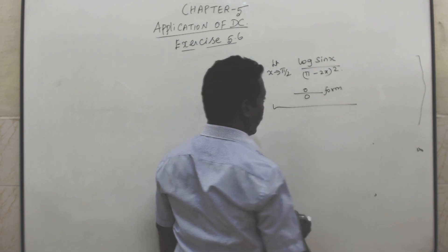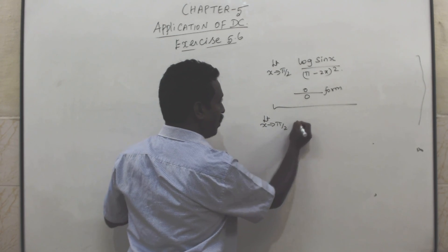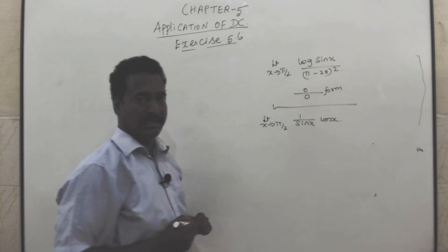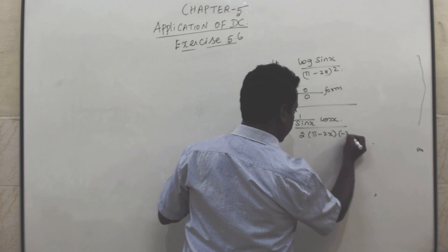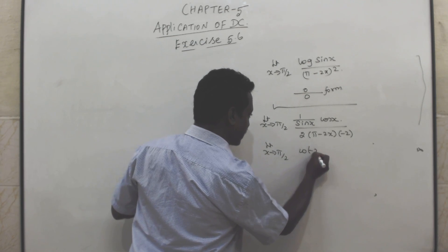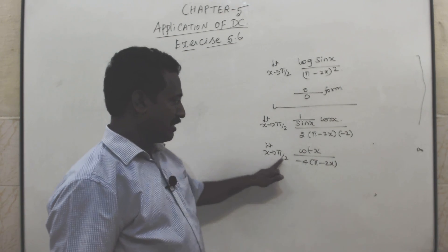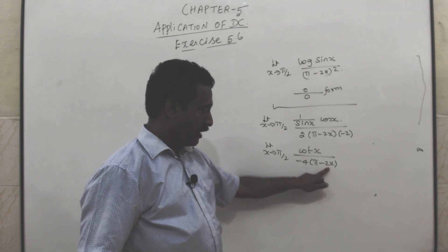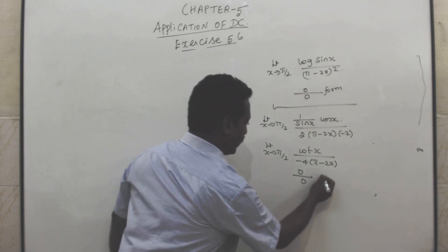Apply L'Hôpital's rule: differentiate numerator log(sin x) to get (1/sin x)·cos x = cot x, differentiate denominator (π − 2x)² to get 2(π − 2x)·(−2) = −4(π − 2x). So we get cot x / [−4(π − 2x)]. Substituting x = π/2: cot(π/2) = 0 and π − 2·(π/2) = 0, still 0/0 form.